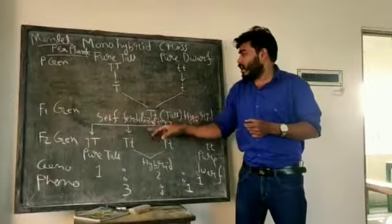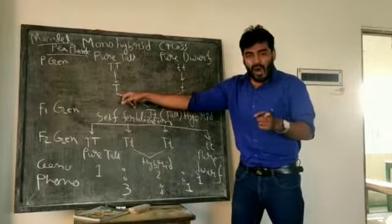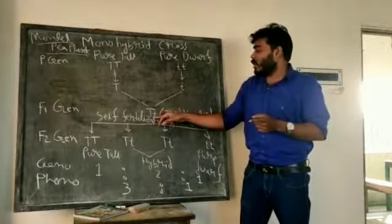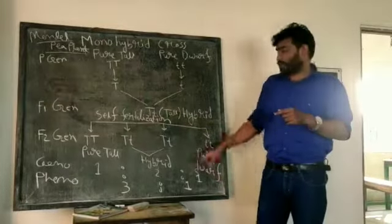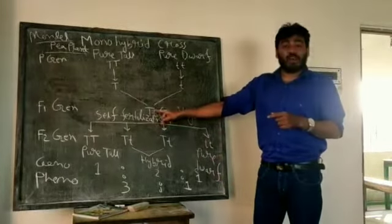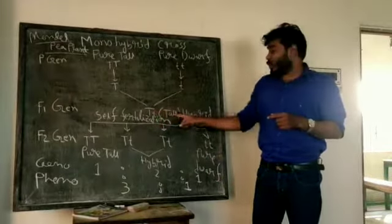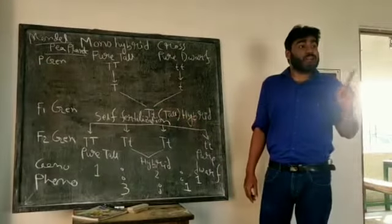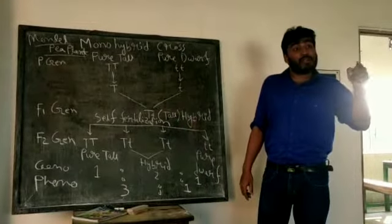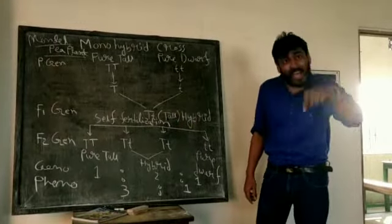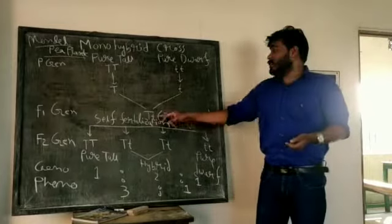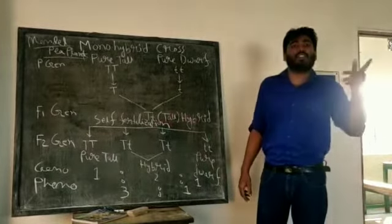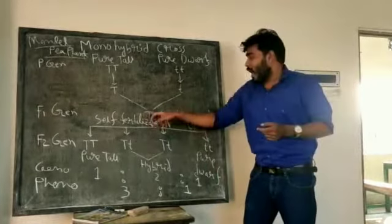What happens in F1? What will happen in the next generation? Caps T with small t — this is called a hybrid tall. It is tall, but inside it has a dwarf gene. It is not a pure tall — it is a hybrid tall, or mixed tall.